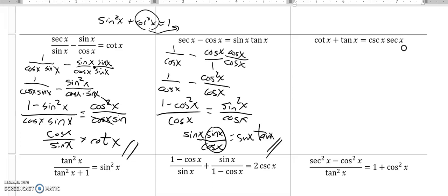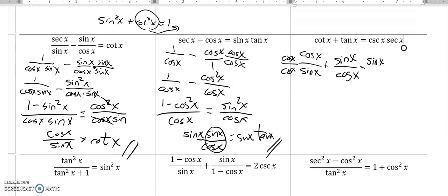Next one — the last one in this group. Cotangent plus tangent equals cosecant times secant. Let's see if we can make that happen. Cotangent is the reciprocal of tangent, so I can write this as cosine over sine. And tangent is the reciprocal of cotangent, so I'm going to think of this one as sine over cosine. Now I have a couple of fractions I want to add together that have different denominators, so I need to make them the same. I'm going to multiply the first by cosine over cosine, and the second by sine over sine, so that I'll have cosine times sine in the denominator.